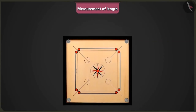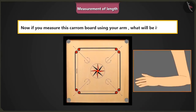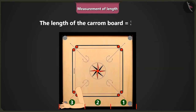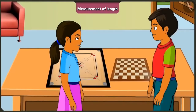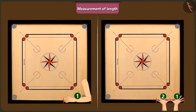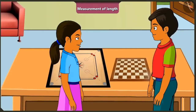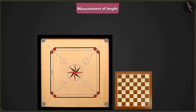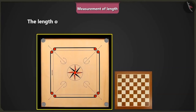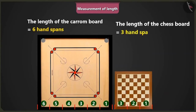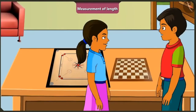Now, if you measure this carom board using your arm, then what will be its length? 1, 2 and 3. The length of this carom board is 3 cubit lengths of my arm. Absolutely correct. So we can say that the length of a cubit of your arm is equal to 2 handspans of your palm. Now, can you determine the length of this chess board? The length of this chess board seems to be half of the carom board. The length of the carom board is equal to 6 handspans, so the chess board would be 3 handspans long. Absolutely correct!